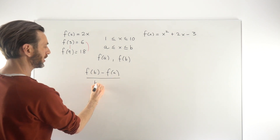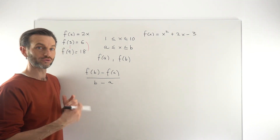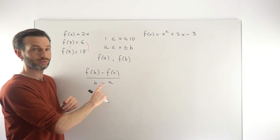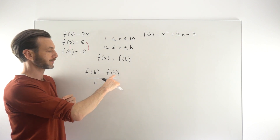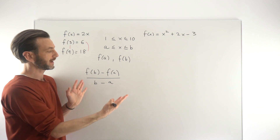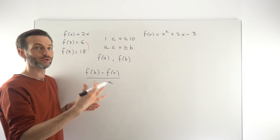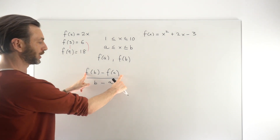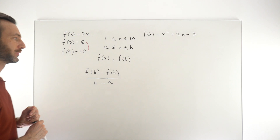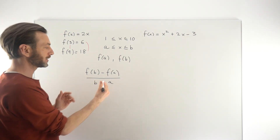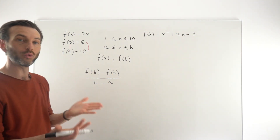We divide that by the change in the x values, which is b minus a. If you're familiar with straight lines, you'll know this is just the formula for a gradient — the difference in the y's divided by the difference in the x's, or the vertical divided by the horizontal. So we're effectively applying that gradient formula, but instead of calling it a gradient, we're calling it a rate of change: how quickly these values change with respect to the interval. All we have to do is put the numbers into the formula to get a single number.